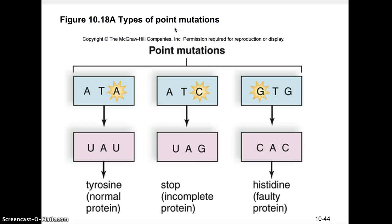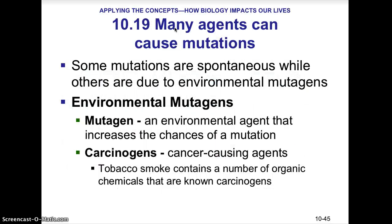A point mutation — for example, you could have ATA changed to ATC or GTC. By changing that nucleotide, you change the messenger RNA. You can either change the messenger RNA where it still codes for the same amino acid, or you could have it code for a different amino acid, which would lead to a faulty protein, or, in a really bad case, change what would originally code for an amino acid to now code for a stop codon. We'll talk about mutations in your worksheet in more detail.